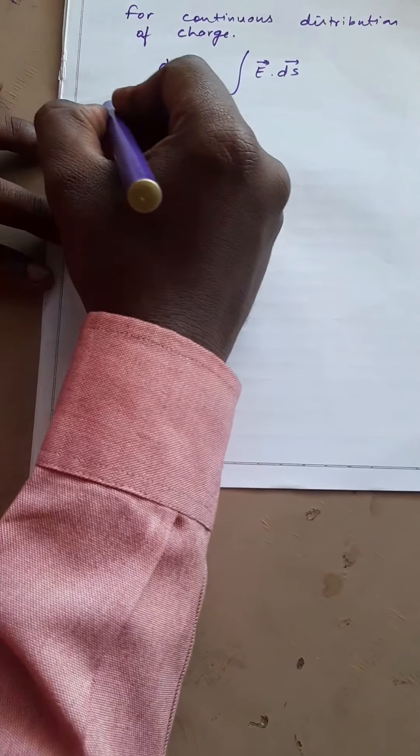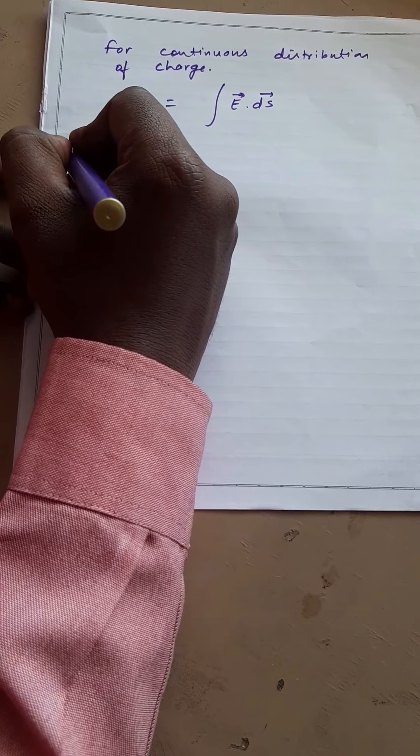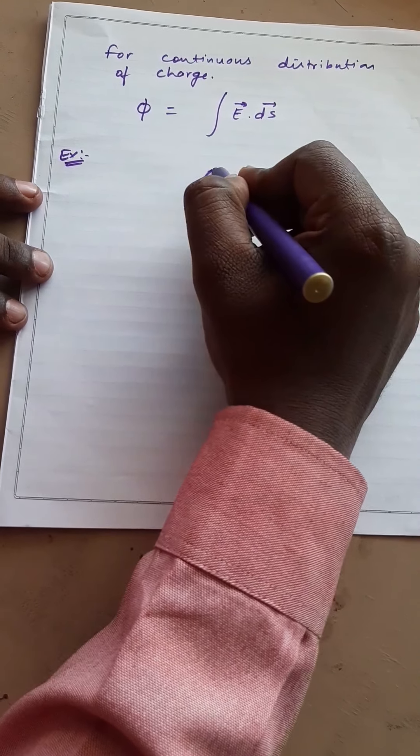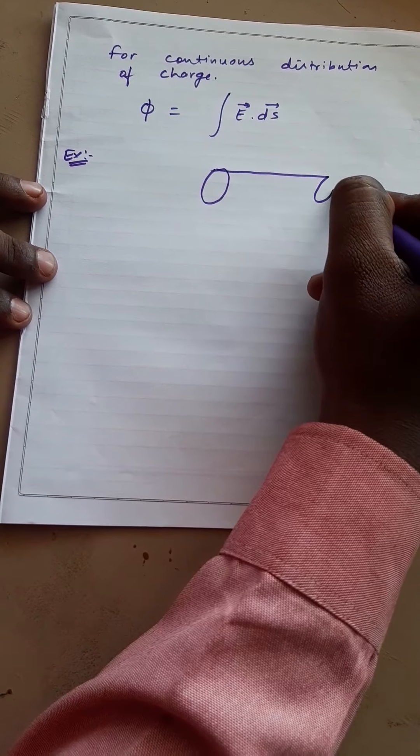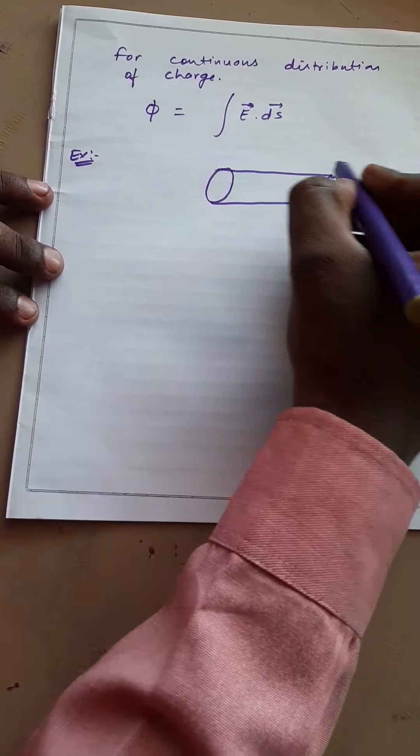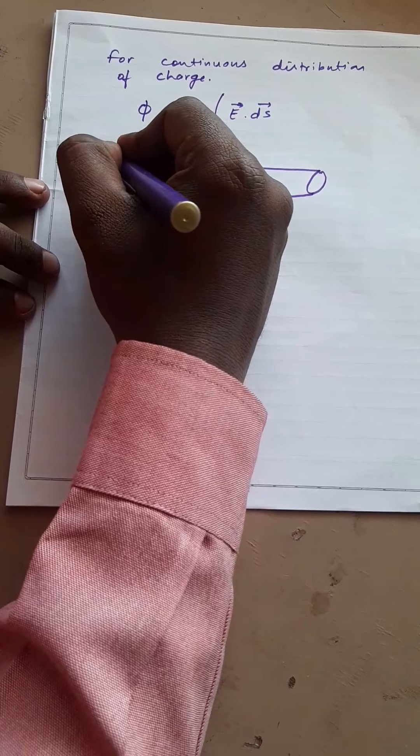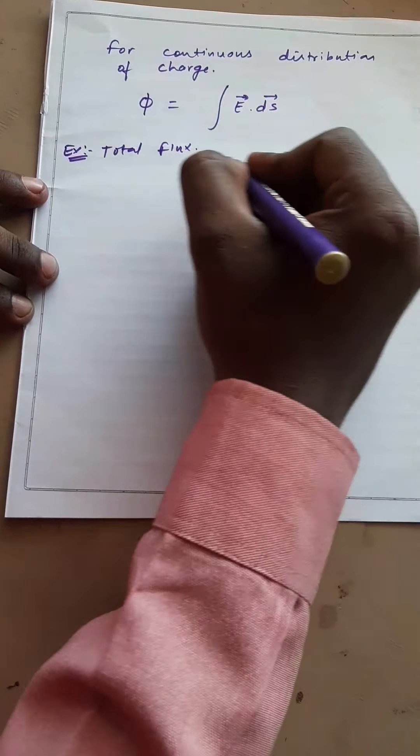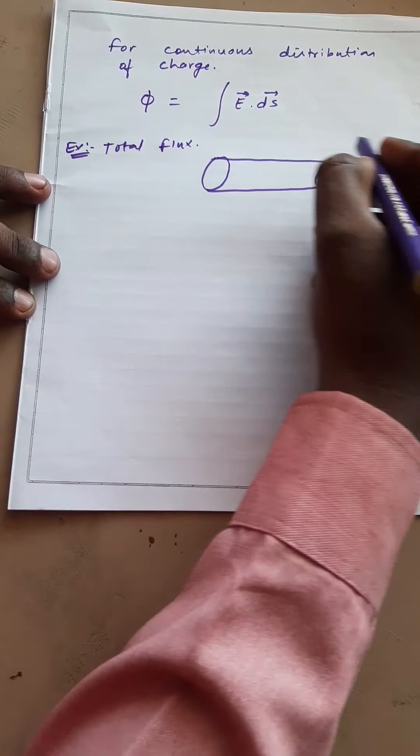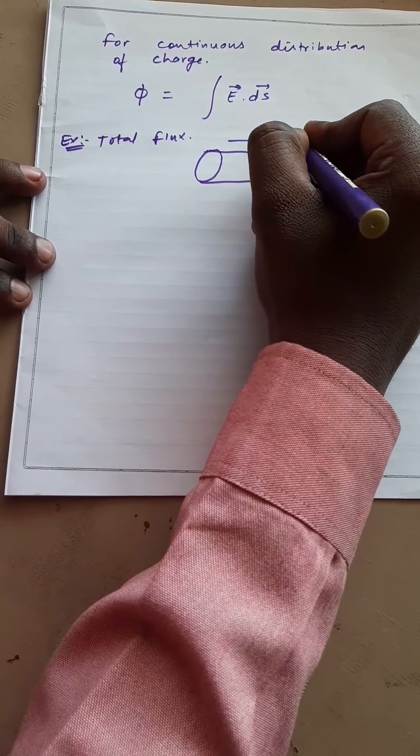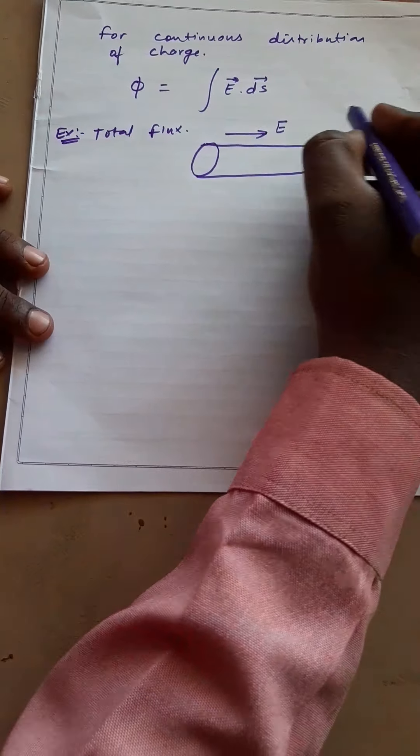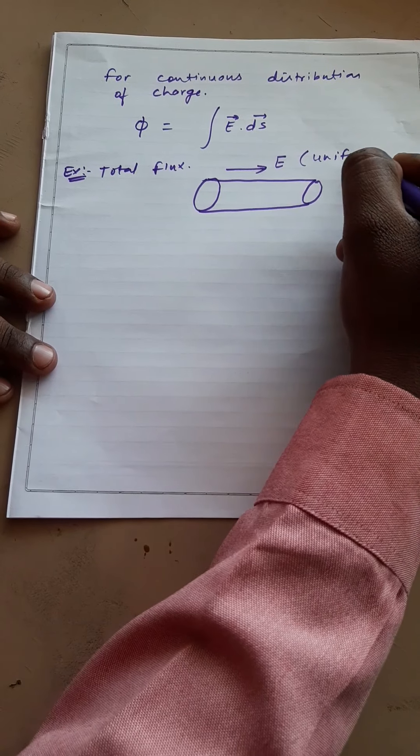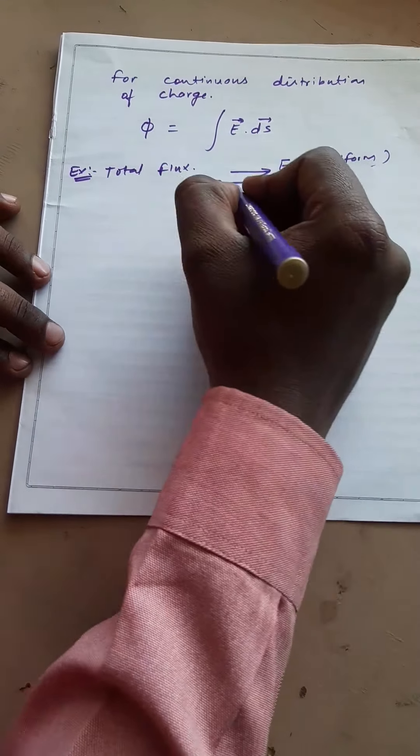Now, let us consider an example in which we need to calculate total flux. In this situation we can consider three surfaces and the direction of electric field is from left to right. The electric field is uniform throughout. So to calculate the electric flux,